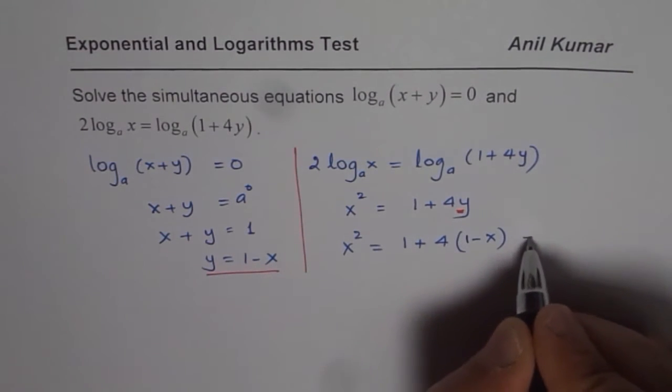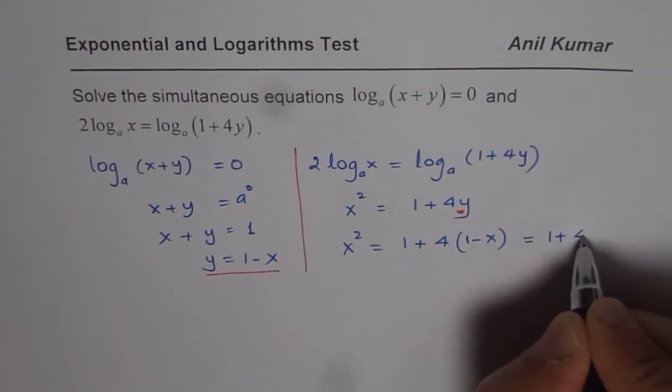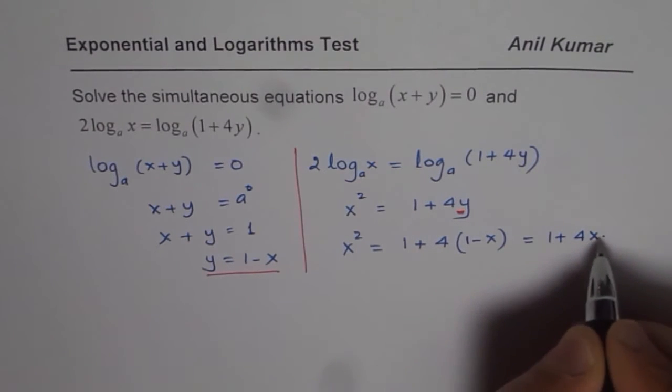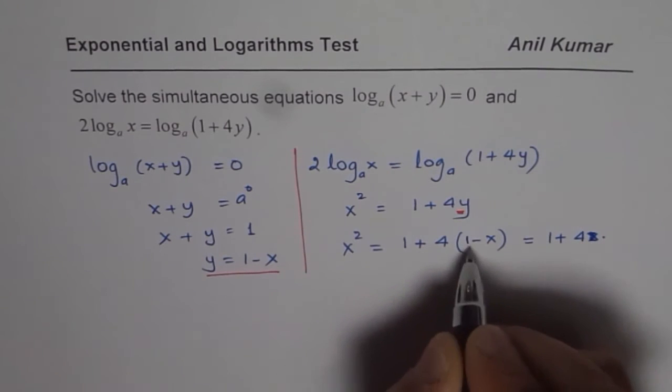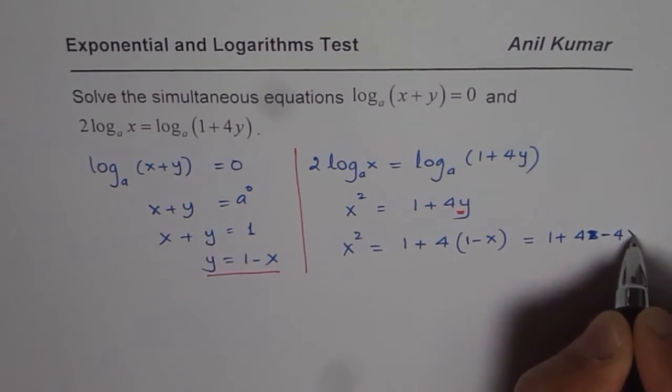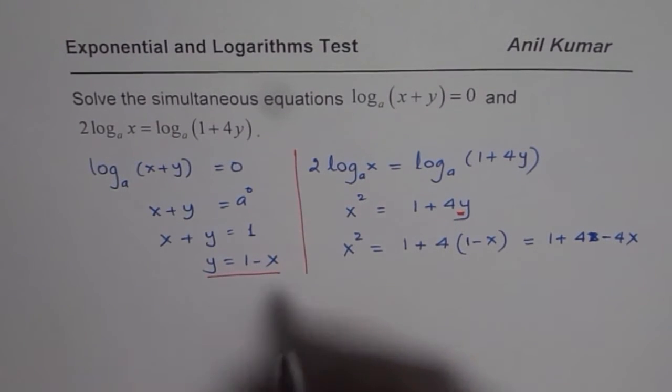We get x squared equals 1 plus 4 times (1 - x). Or let us expand this: 1 plus 4 minus 4x.